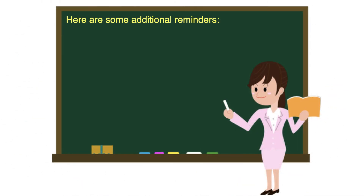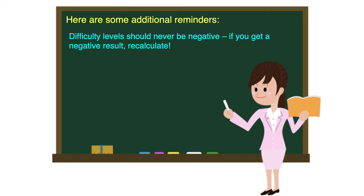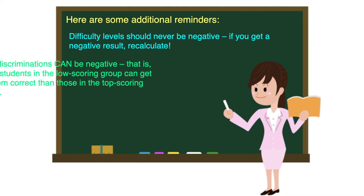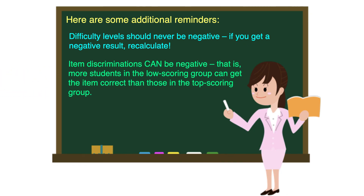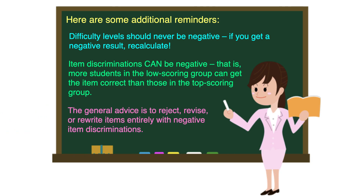Here are some additional reminders. Difficulty levels should never be negative — if you get a negative result, recalculate. Item discriminations can be negative, meaning more students in the low-scoring group got the item correct than those in the top scoring group. The general advice is to reject, revise, or rewrite items entirely with negative item discriminations.